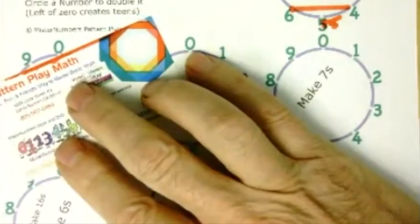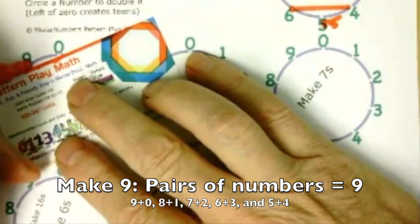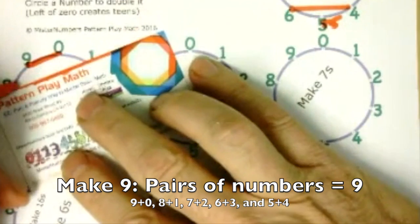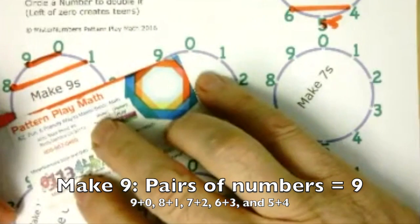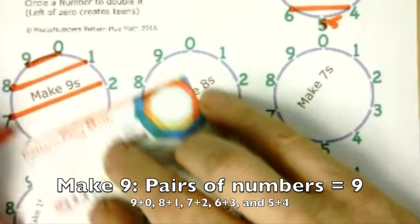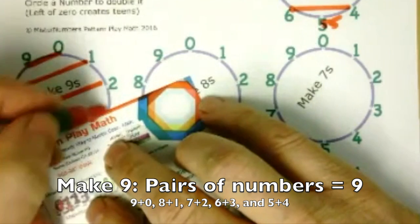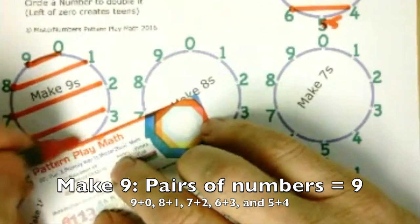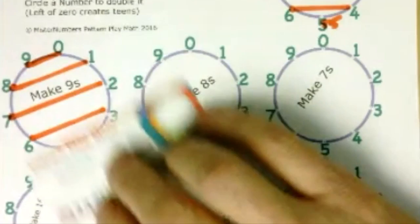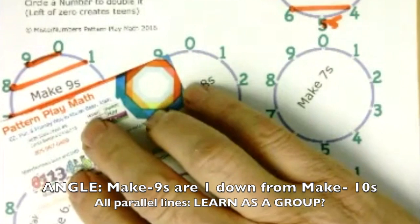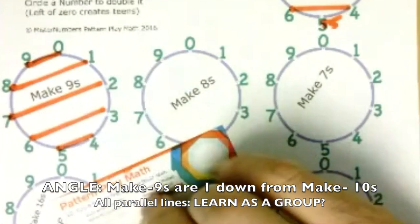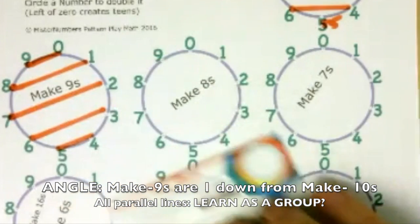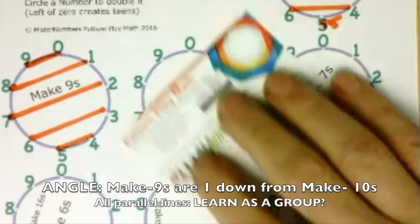And then our 9s, we learn those. So 0 and 9, 1 and 8, 7 and 2, 6 and 3, and 5 and 4. Now you'll notice that all the make 9s are at an angle. So it's really helpful for kids to use this sheet because they see how it is.